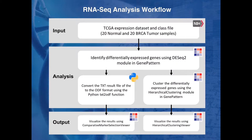To demonstrate, we'll create a new notebook which will walk us through an example differential expression workflow for RNA-seq data. For this example, we will be using 20 breast cancer primary tumors and 20 normal samples from the Cancer Genome Atlas Data Portal, or TCGA, which were previously passed through a data prep workflow for RNA-seq data.